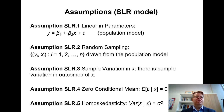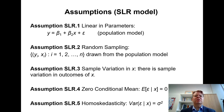The fifth assumption is about the conditional variance, referred to as the homoscedasticity assumption. We assume that the variance of epsilon for any given level of x is constant, sigma squared.